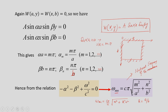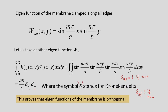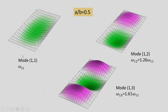Taking aspect ratio a/b = 0.5, where a = 1 and b = 2, we plot the mode shapes. The first mode corresponding to ω₁₁ (m = 1, n = 1) shows no nodal lines — it is the fundamental mode with no internal nodes visible. Any cross-section along x or y shows a smooth sinusoidal shape.